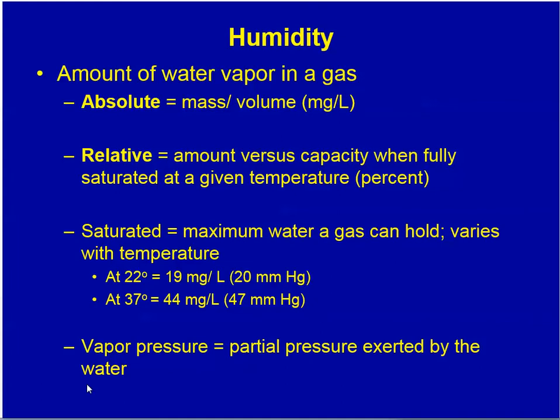Let's turn to the topic of humidity. Humidity is the amount of water vapor in a gas. It can be expressed as absolute humidity — the mass per volume in milligrams of water per liter — or relative humidity, which is the amount of water versus the capacity when fully saturated at a given temperature. Saturation means the gas is holding as much water as it can, and it varies with temperature. At 22 degrees it can hold about 19 milligrams per liter, and at 37 degrees about 44 milligrams per liter. The partial pressure of water vapor at these two temperatures is 20 and 47 mmHg, respectively.